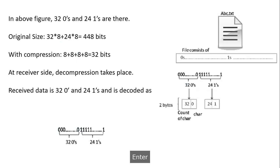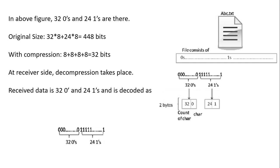In the example shown, a file contains 32 zeros and 24 ones. If we don't use any encoding, we use 8 bits to store each zero or one. Therefore the size of the original file is 32×8 + 24×8, which means a total of 448 bits are required.